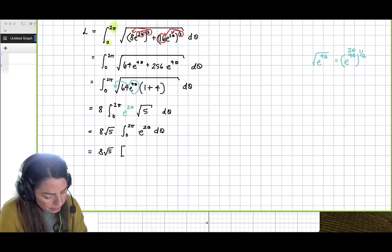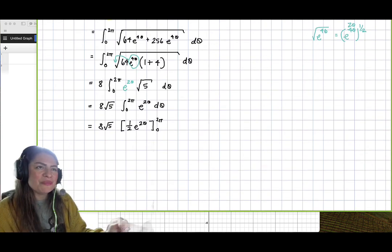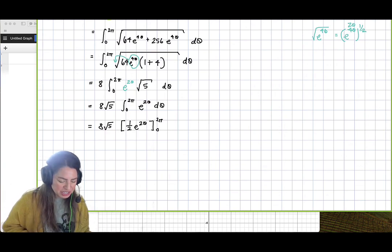So now what we're going to have is 1 half e to the 2 theta evaluated from 0 to 2 pi. And if you need to use u substitution there, go ahead and do that. We're far along in our integration techniques.